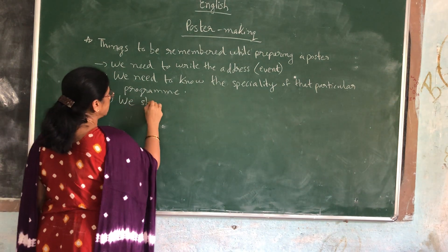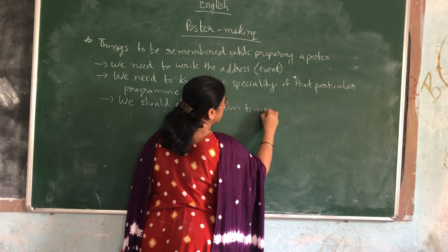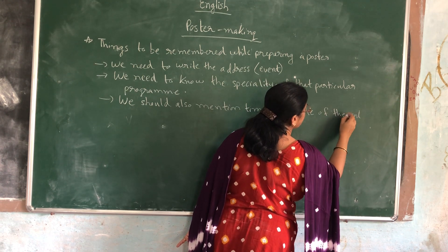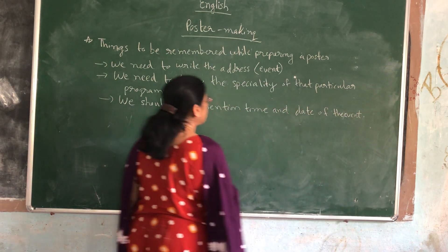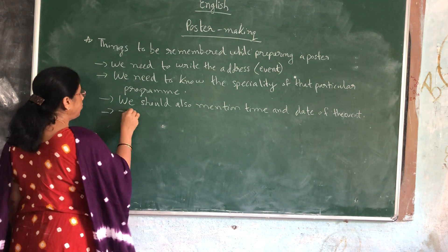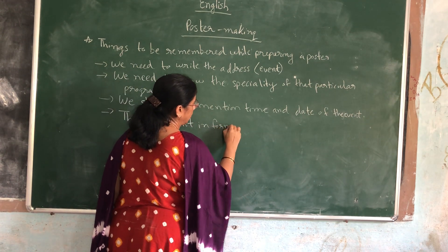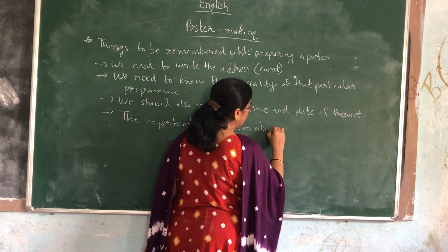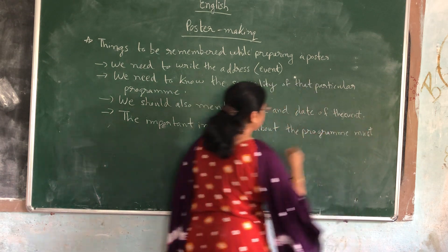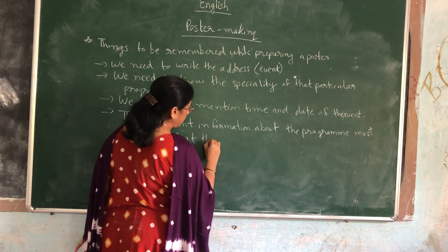Next, we should also mention the time and date of the event. Now, these are all part of the introduction section of the poster. The important information — that is the detailed information about the program — must be displayed at the center of the poster.